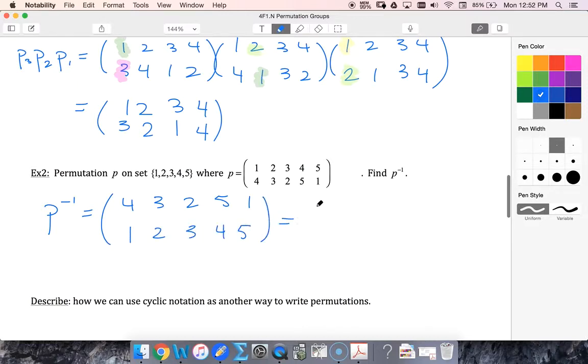And then I'm going to reorder it because mathematicians like to put things in order. So five, three, two, one, four. Switch the rows and then reorder to put it in order.